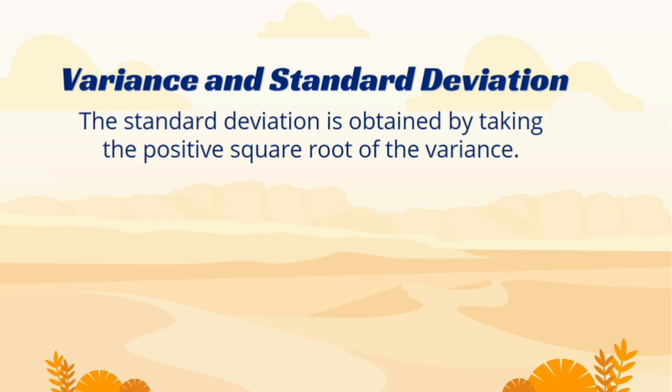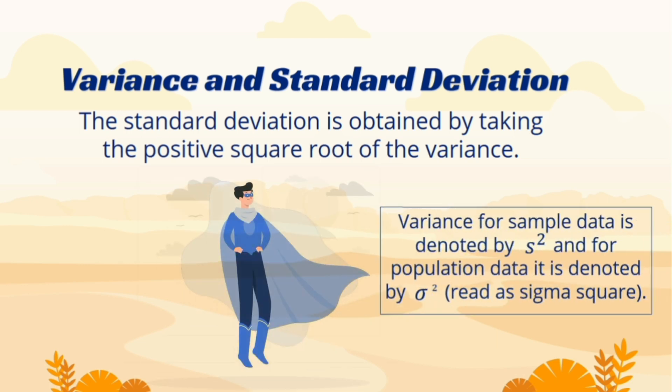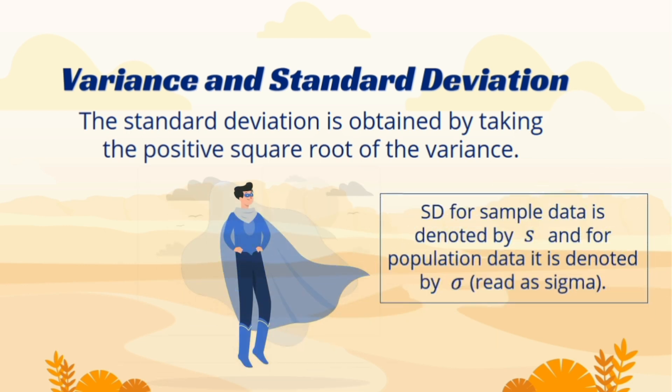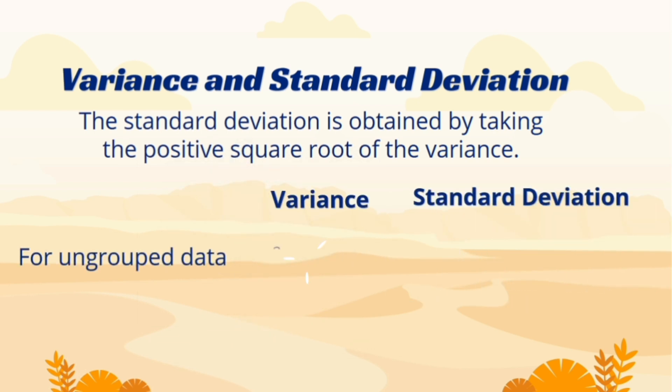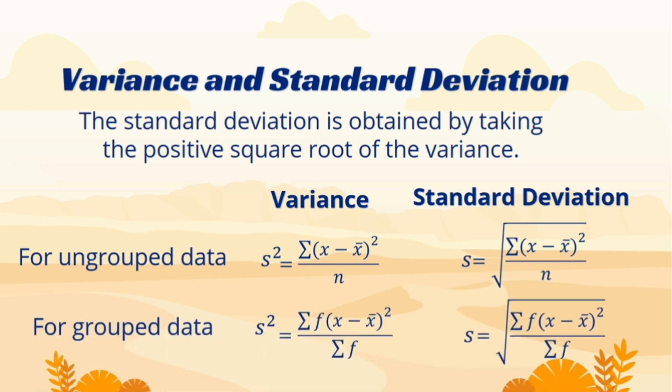For sample data, variance is denoted by s² and standard deviation by s. To deal with ungrouped data, the formula can be read as variance equals sum of square of deviation of each observation from mean divided by n. And standard deviation equals positive square root of sum of square of deviation of each observation from mean divided by n. And for grouped data, we include the frequencies.